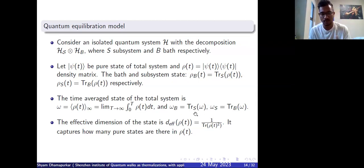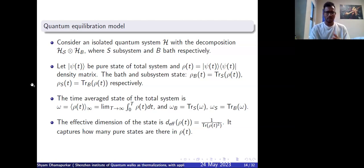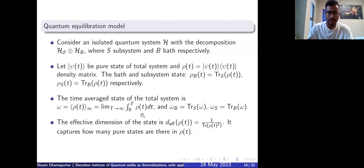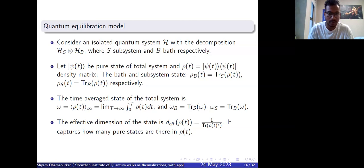You look at omega_B and omega_S by tracing out the respective parts. One important quantity is the effective dimension of the state — how many pure states are involved in rho(t), captured by one divided by the trace of rho(t) squared. This provides ideas on how the state is going to equilibrate.